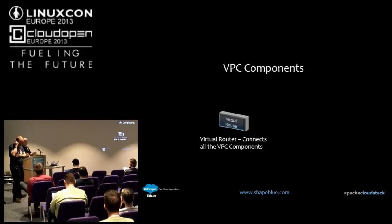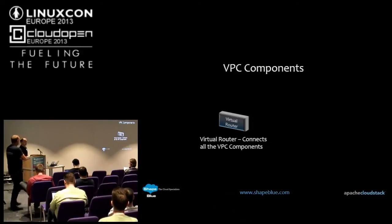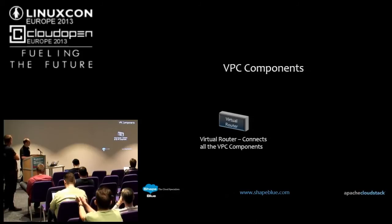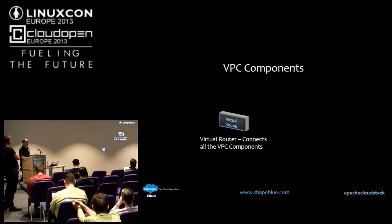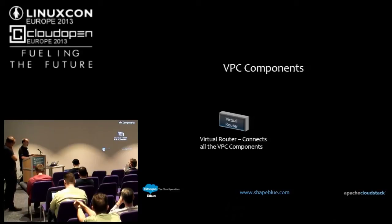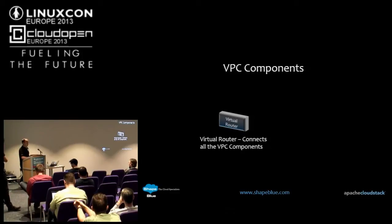What I was going to show you was the VPC functionality, but the laptop's playing up. VPC is basically tiered networking — a really powerful feature. As a user, I can create multiple networks. Each network has its own VLAN and its own IP schema, and they're all connected together by the virtual router. I can then control what goes on between those different layers.